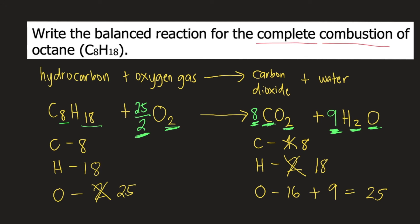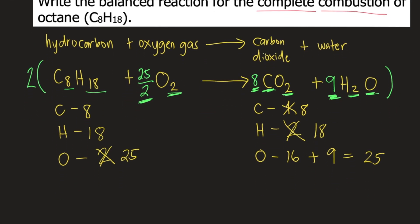What we need to do is multiply the entire reaction, all the coefficients, by 2. So let's start with C8H18. The coefficient of C8H18 is 1. So 2 times 1, that's equal to 2. So it becomes 2C8H18 plus 2 times 25 halves, that's 25. So 25O2.